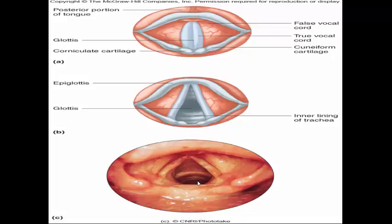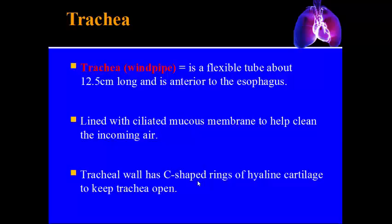The trachea, also called the windpipe, is a flexible tube about 12.5 centimeters long, located anterior to the esophagus. It is held open by C-shaped rings of hyaline cartilage, which is why you can feel it easily in the front of your throat. The trachea is lined with mucous membranes that have cilia to help filter and clean incoming air.